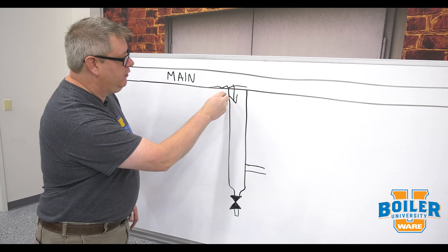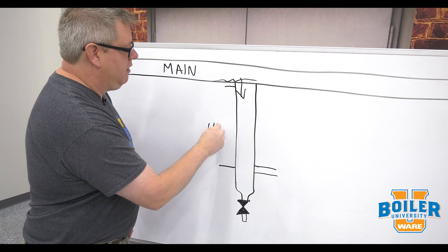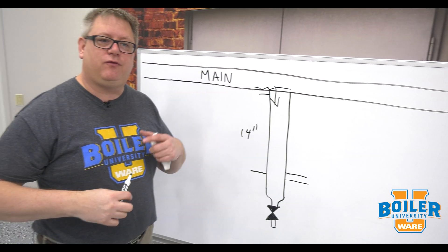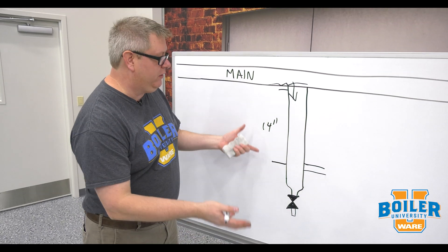The height of this drip leg typically is going to be about 14 inches. That is for a manually started up system.